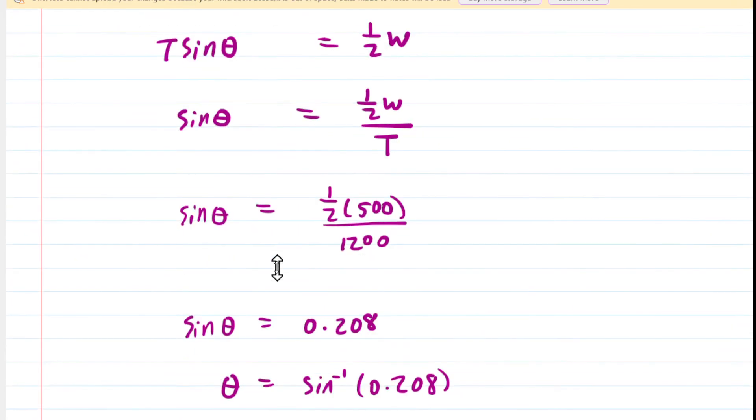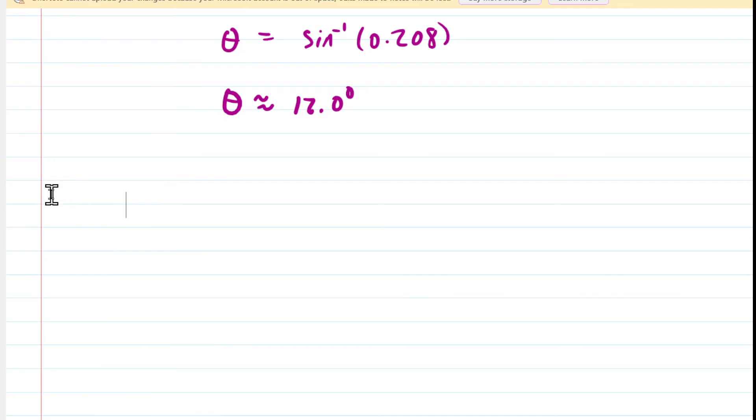Let's check out this equation right here. And the question is asking about the tension snapping, or the cable snapping. Why don't we isolate this for the tension? So to do that, we would add the half W and then divide by sine theta.